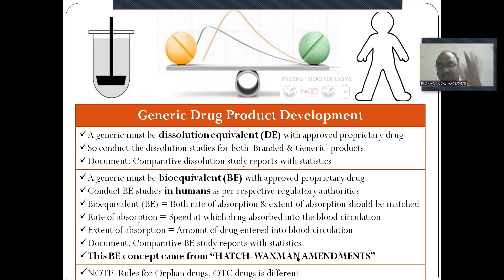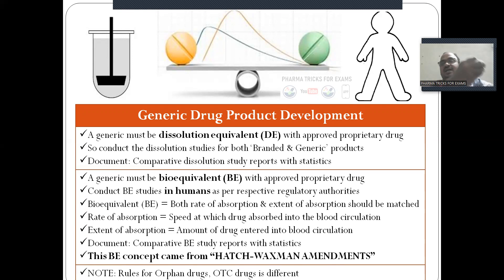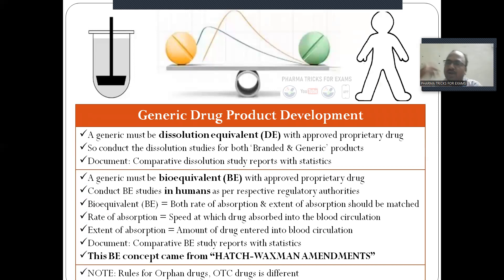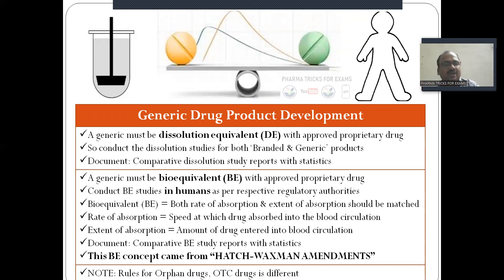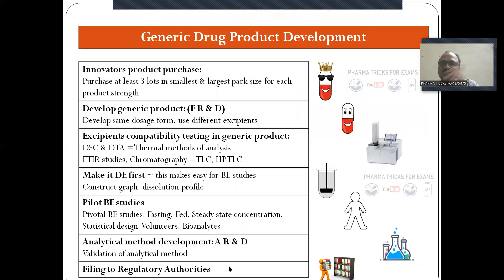This bioequivalence concept came from the Hatch-Waxman Amendments — very important legislation. It stipulates that a generic product must be bioequivalent to the branded one; only then can you immediately apply to the government regulatory authority, get approval, and start manufacturing and marketing. Note: there are different rules for orphan drugs and OTC drugs.